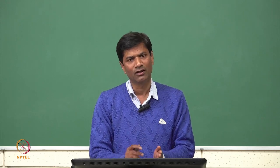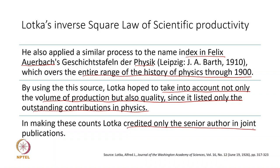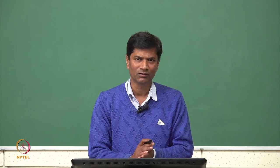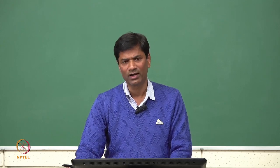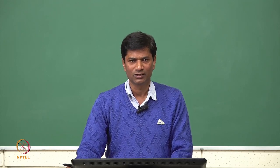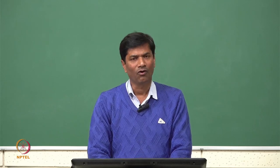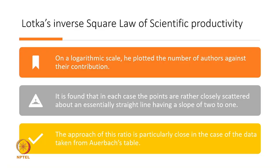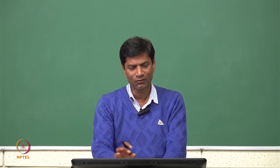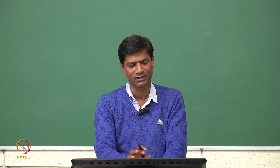The second source — Auerbach — was an authentic source for the history of physics and listed only quality contributions. While making this count, Lotka only credited the senior author in joint publications. If a publication had two or more authors, Lotka only took the senior author while counting the number of publications against the author. On a logarithmic scale, he then plotted the number of authors against their contributions.